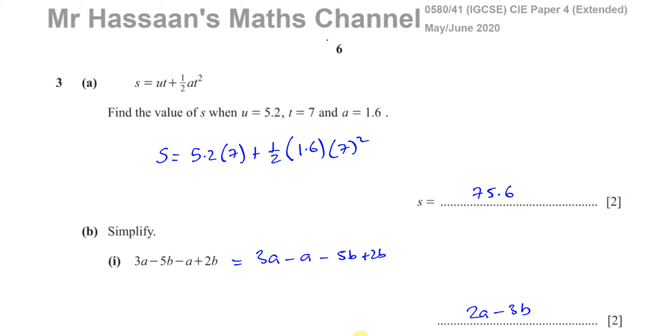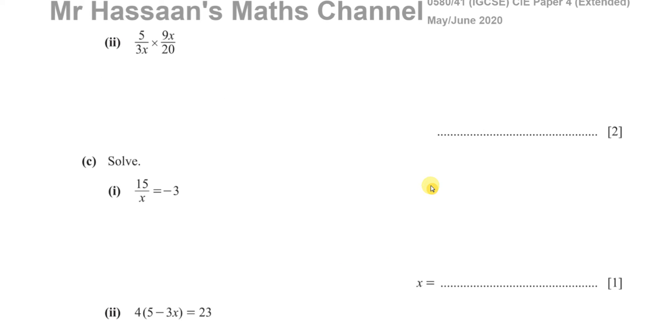Now for C. We have this algebraic fraction multiplication to do. We've got to multiply 5 over 3X times 9X over 20. What we could do is multiply the numerator and multiply the denominator and then simplify the answer. But with multiplication of fractions, it's way easier to start off by simplifying, by cancelling out any common factors. So this is 5 times 1 and this is 5 times 4, so the 5s will cancel leaving you 1 and 4.